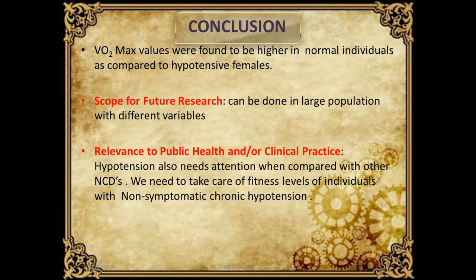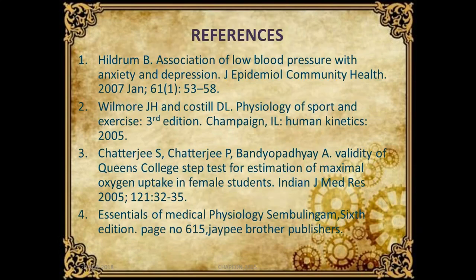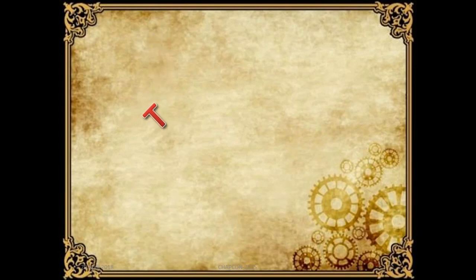Conclusion: VO2 max values were found to be higher in normal individuals compared to hypotensive females. Scope for future research: this can be done on a larger population with different variables. Relevance to public health and clinical practice: hypotension also needs attention when compared with other non-communicable diseases. We need to take care of the physical fitness of individuals with non-symptomatic chronic hypotension.